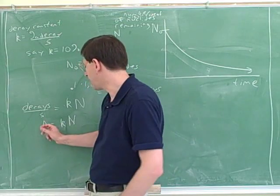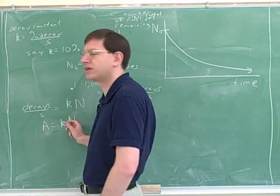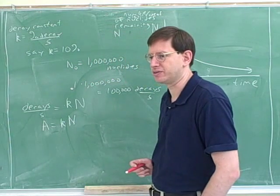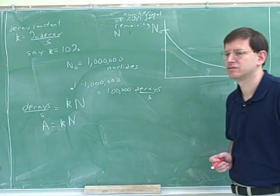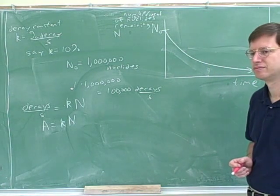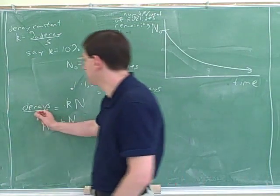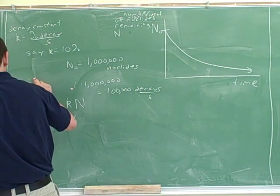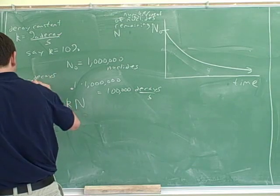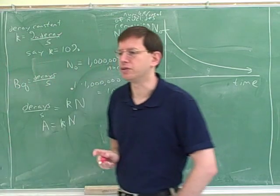So here's our general formula that relates the activity, or the number of decays, to the number of molecules. This unit of decays per second is called a Becquerel. BQ for Becquerel.